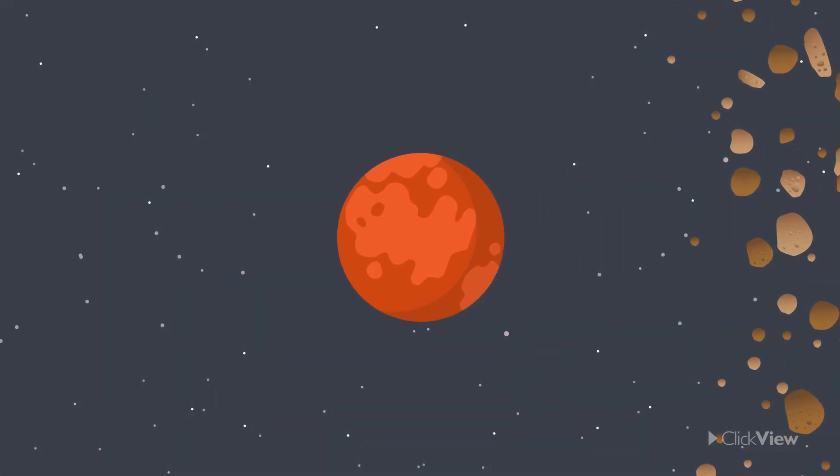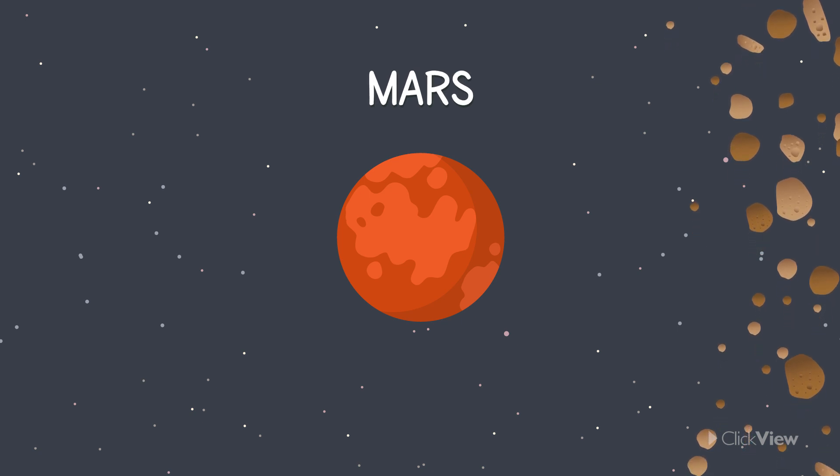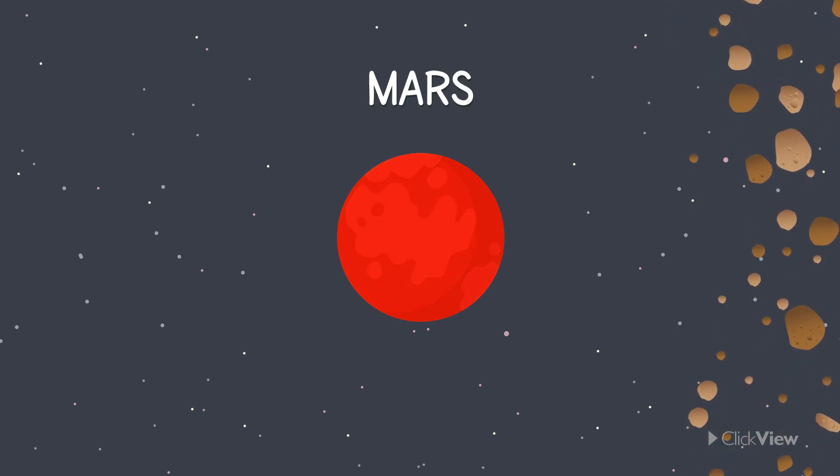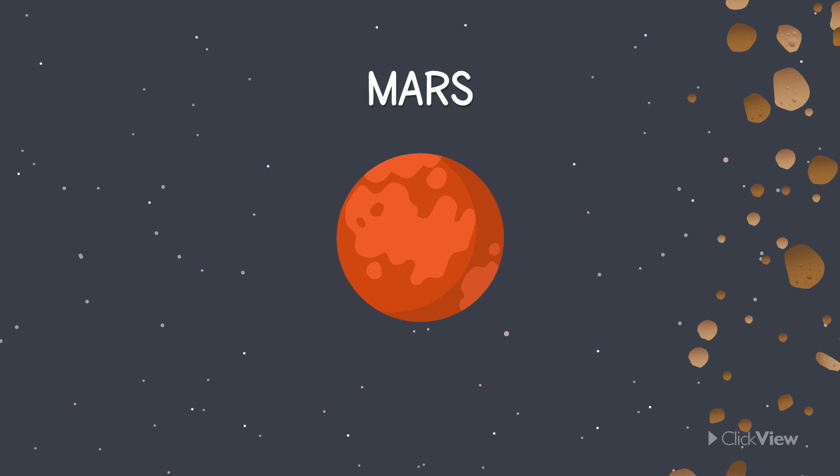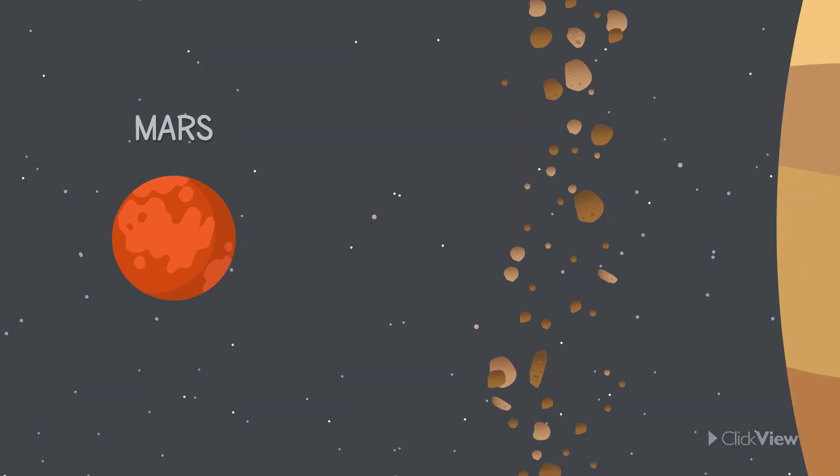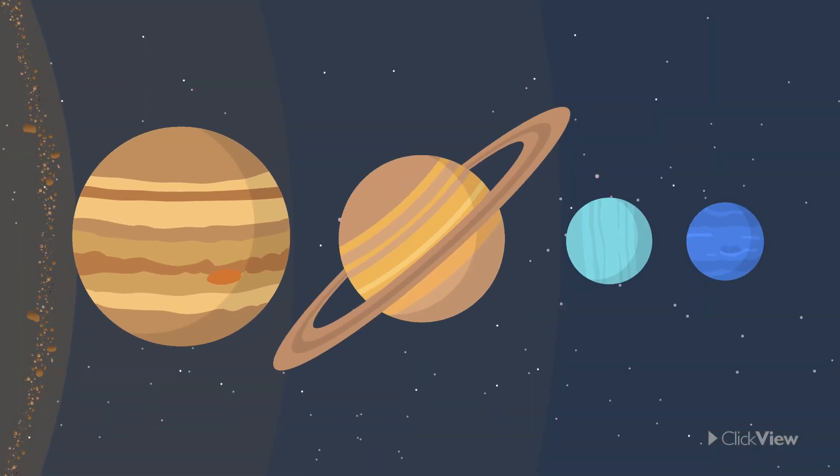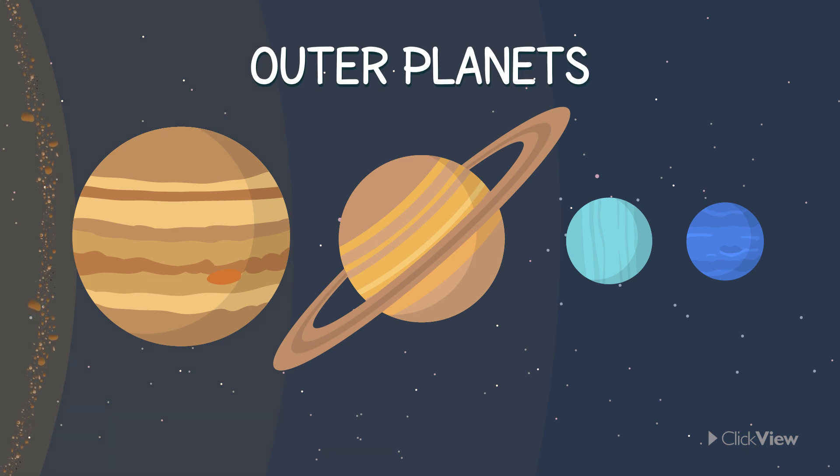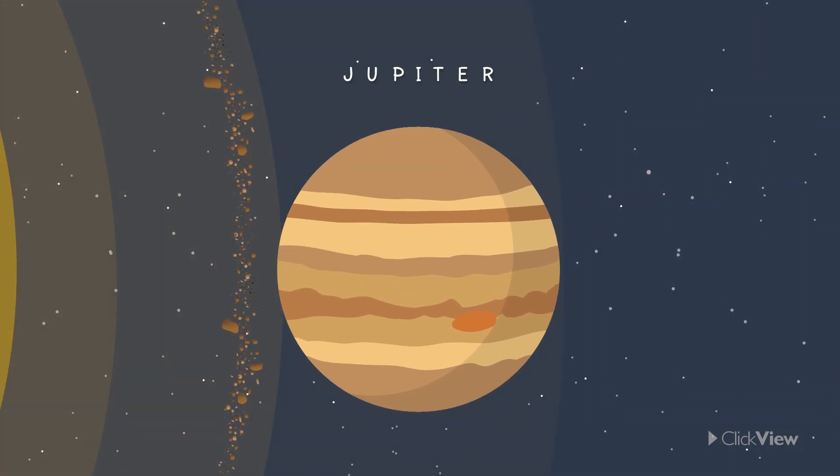The fourth planet from the Sun is Mars and is often called the red planet. The next four planets are called the outer planets because they are present outside the asteroid belt. The fifth planet from the Sun is Jupiter.